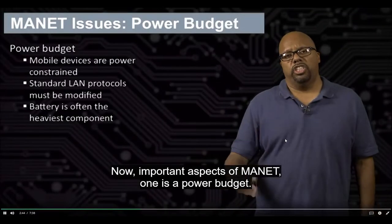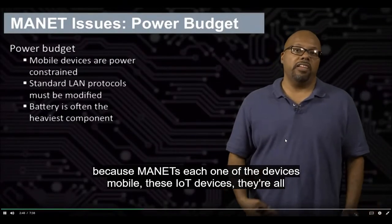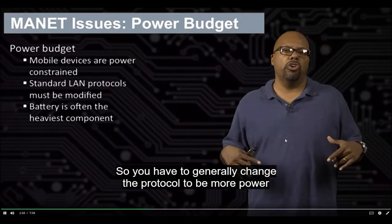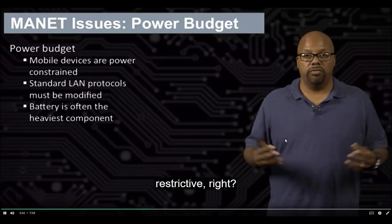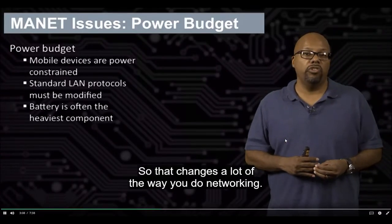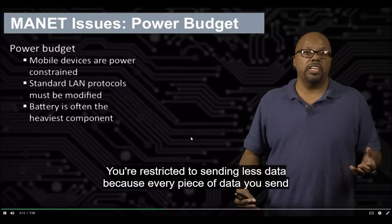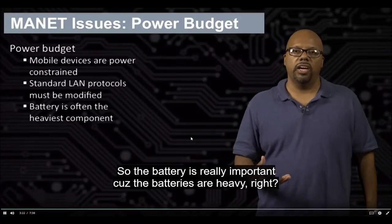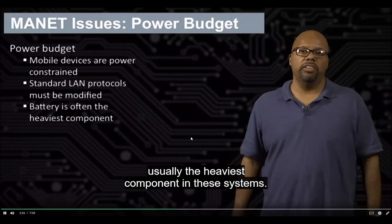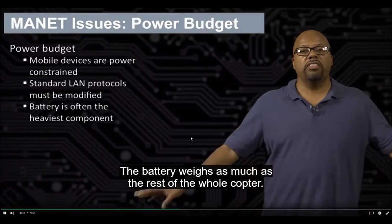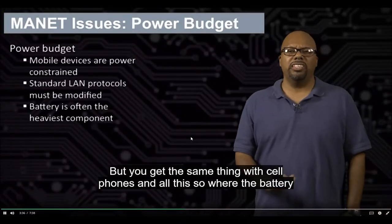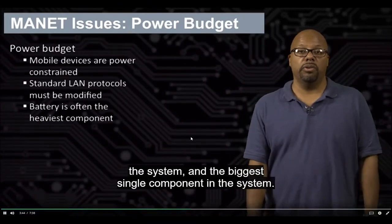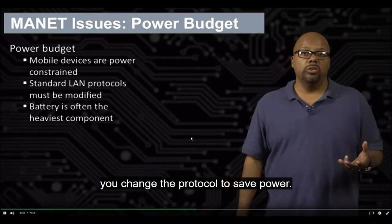Important aspects of MANET: one is the power budget. You have to worry about power because each device in a MANET is mobile, running off batteries that can run out. You have to change the protocol to be more power restrictive — you need to save power. So you send less data because every piece of data sent uses power to drive the antenna. Batteries are often the heaviest component in these systems — like my quadcopter, where the battery weighs as much as the rest of the whole copter and only lasts 15 minutes.